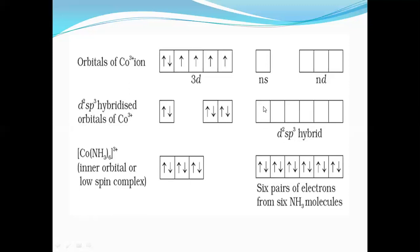The six d2sp3 hybrid orbitals overlap with the six pairs of electrons donated by ammonia, forming coordinate bonds. Hence this is called d2sp3 hybridization. Since the d2 orbitals used are from the inner 3d shell, it is called an inner orbital complex or low-spin complex. Since there are no unpaired electrons in the complex, it is diamagnetic in nature.